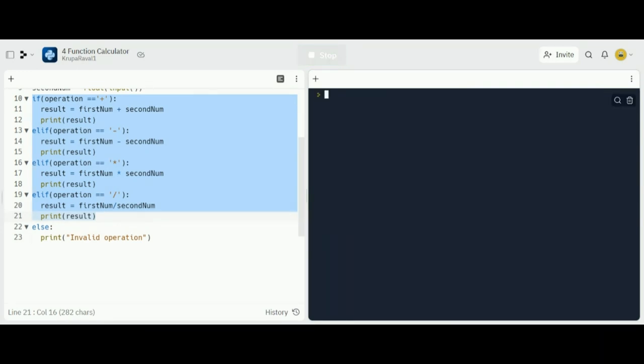Now to see an example for which it will print out the invalid operation, I'm going to put number 2 as a first number, and a quotation mark as the inputted operation, and the number 3 as the second number. You see that the result is invalid operation. Thank you.